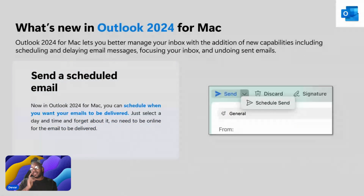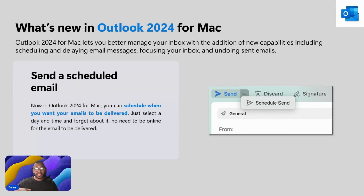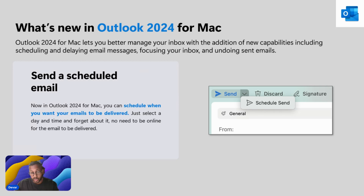Scheduled email sending — this is something I love because sometimes I like to work late, and not everyone's awake or paying attention at that point. Having the option to schedule emails is great. I can write my email, put it in draft, select a scheduled send time, and choose to send it the next morning. So even if I'm not on my computer, as long as it's switched on, it will automatically send at the time I set.